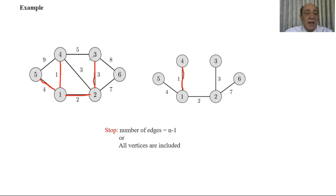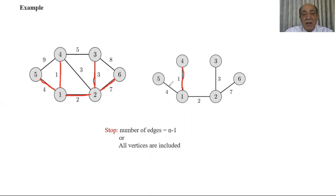Next, weight 7 — no cycles, so we can include it. We now have five edges and six vertices, so we are done. This is our minimum spanning tree, and the total cost is 4 plus 1 plus 2 plus 3 plus 7, which equals 17.